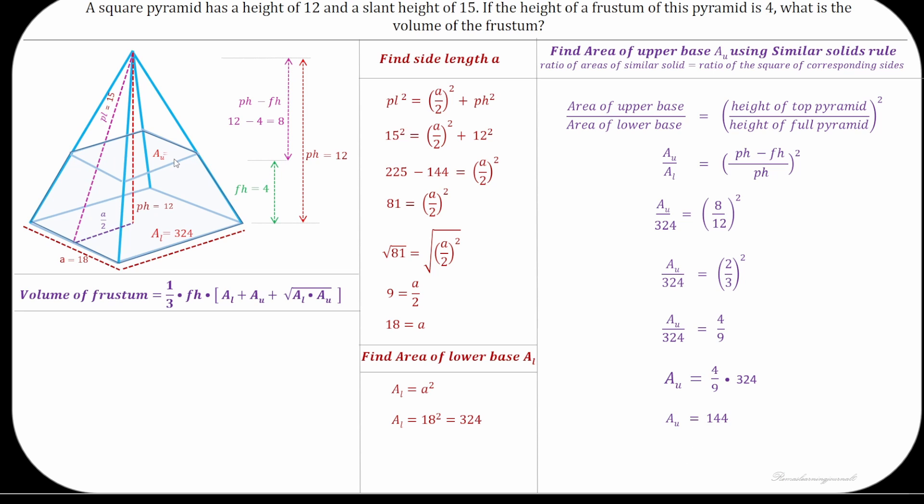Now substitute the value of height of the frustum and lower and upper base areas into the formula for volume and the volume of frustum is 912 cubic units.